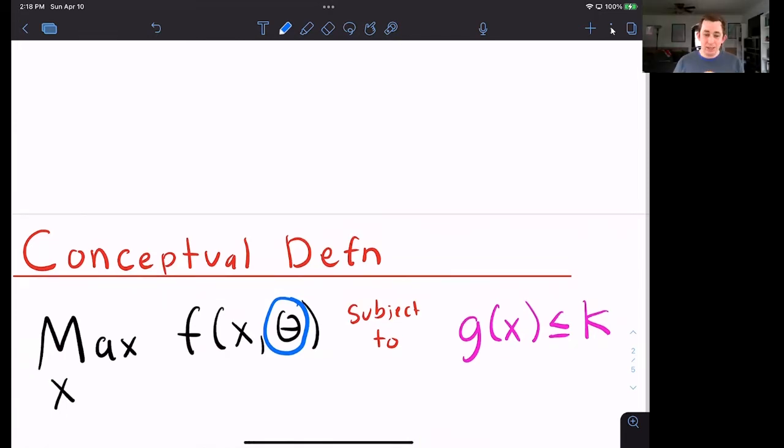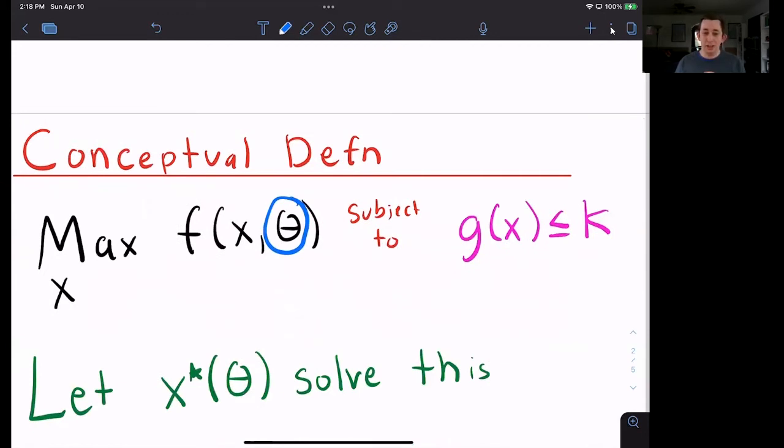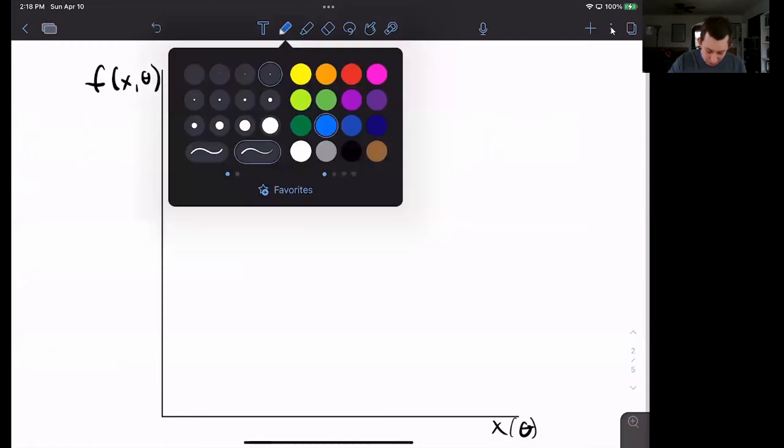And now let's assume that we've gone through, we've solved this problem, and we've got some x star that solves this problem, and it's a function of the parameter of the problem. So what does this mean graphically? Well, if I have a graph of the function and x star of theta,